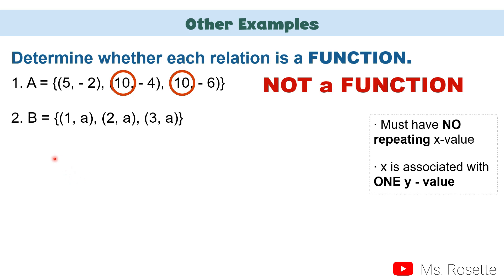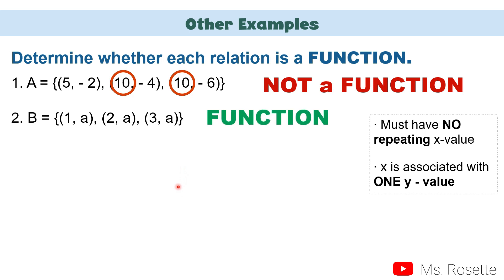Set B is equal to (1, A), (2, A), and (3, A). Look at the x values: we have 1, 2, and 3. There is no repeating x value. Therefore, this one is a function.